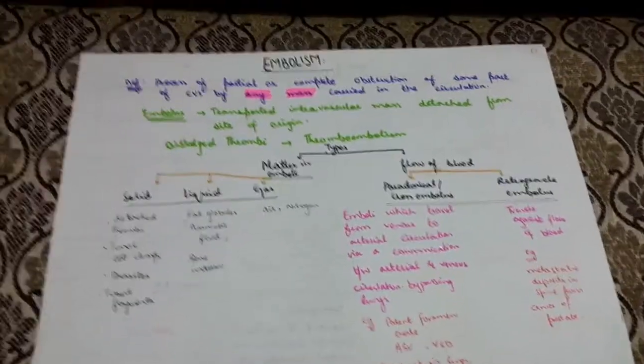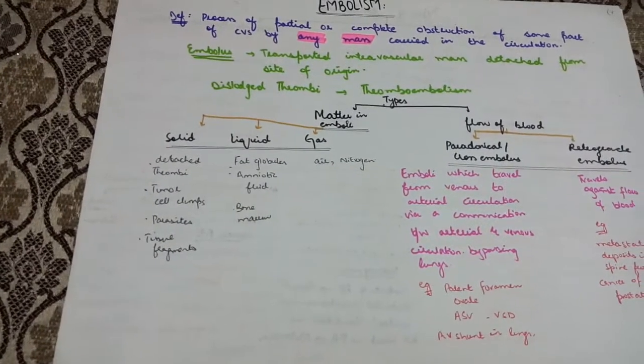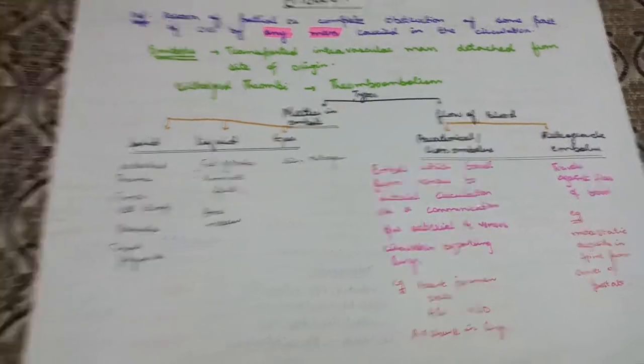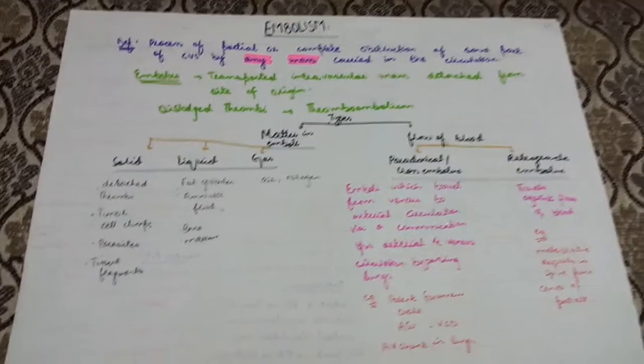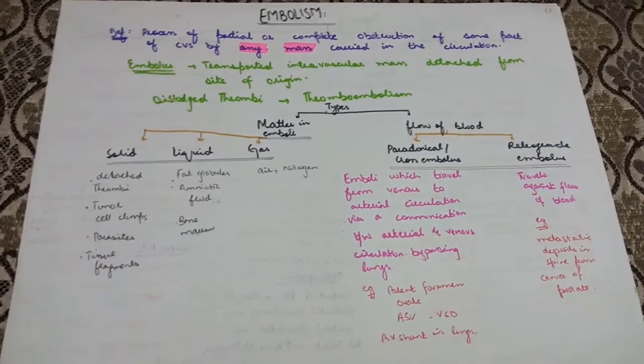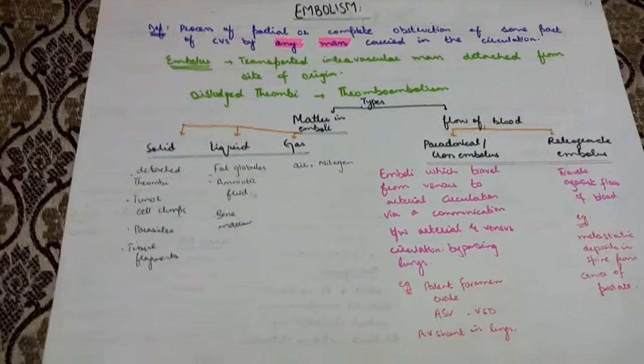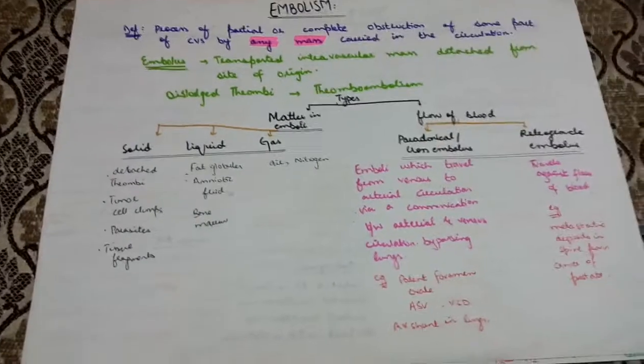We are here to discuss a topic called embolism. Embolism is defined as the process of partial or complete obstruction of some part of the cardiovascular system by any mass carried in the circulation. It is the transported intravascular mass detached from the site of origin.